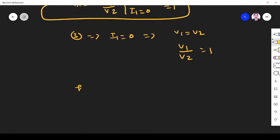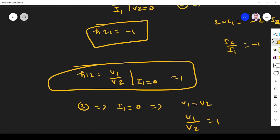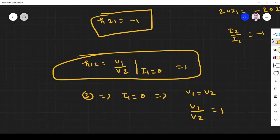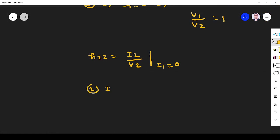What's the last thing? h22. h22 is i2 by v2 with i1 equal to zero. I need v2, i2, and i1. From equation 2 when i1 is zero, v2 equals 20 i2. So i2 by v2 equals 1 by 20, which is 0.05. So h22 equals 0.05.